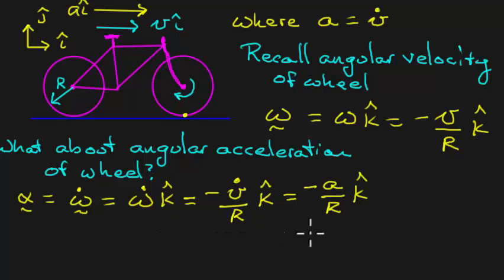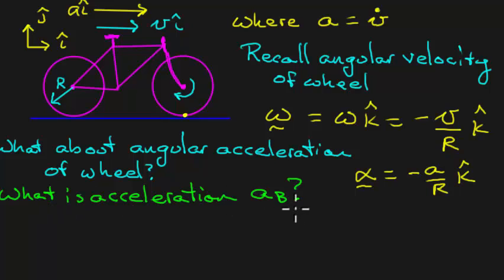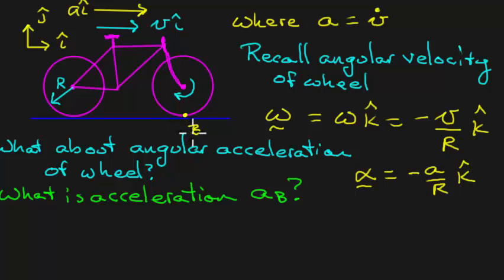Now let's write that result in compact form: alpha equals minus a over r in the k-hat direction. The next question is: what is the acceleration at the bottom of the wheel — point B, where it touches the ground? We know its velocity is zero at that instant, but what is its acceleration? This is critically important for gear analysis and the dynamics of rolling bodies.